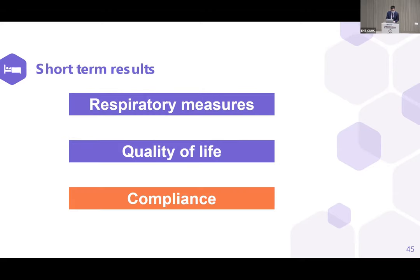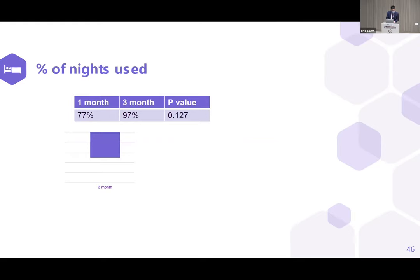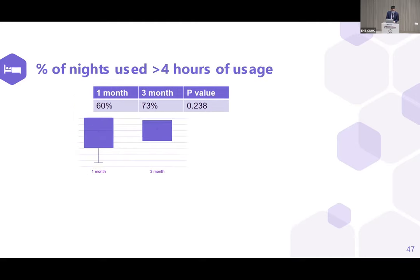For compliance data, the percentage of nights the device was used was 77% at one month and 97% at three months. For nights with more than four hours of usage, it was 60% at one month and 73% at three months. Overall, compliance was on par with figures found in the literature.